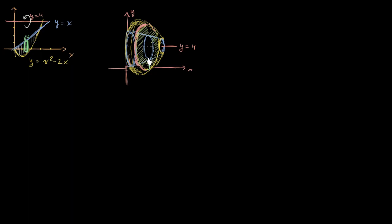If we can figure out the volume of one of these washers for a given x, then we just have to sum up all of the washers for all of the x's in our interval. Let's set up the integral. To find the volume of the washer, we really just have to think about the area of the face of the washer — that's the area of the full disk minus the area of the part we're cutting out.